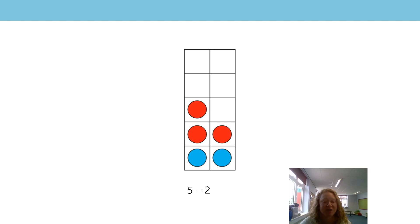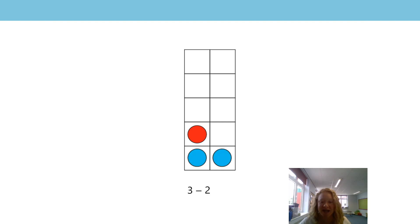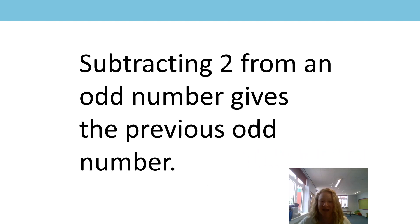Let's keep going — we've got five and we're subtracting two, and it's going to leave us with three, because it's the previous odd number. Can you guess what number we're going to start with next? You knew it was going to be three! So we've got three and we're subtracting two, and it's going to leave us with just one. So we've also realized the generalization: subtracting two from an odd number gives you the previous odd number. Whenever you subtract two, it's going to leave you on the previous odd number.